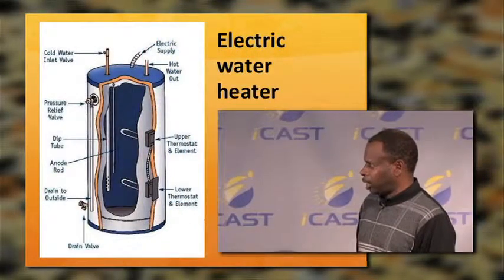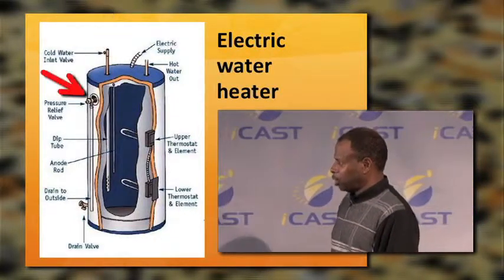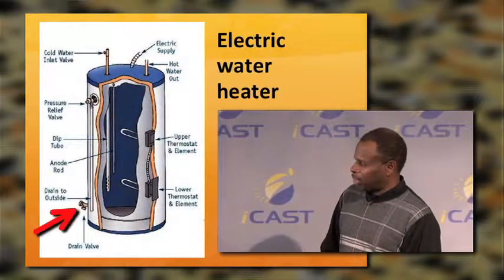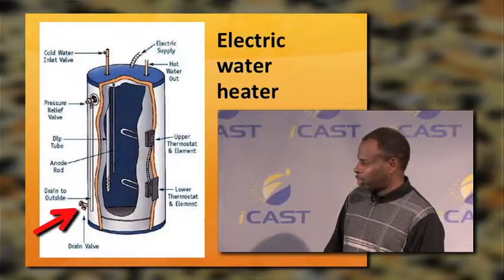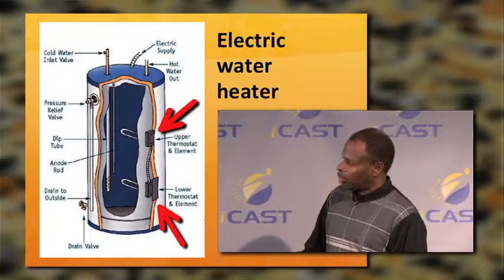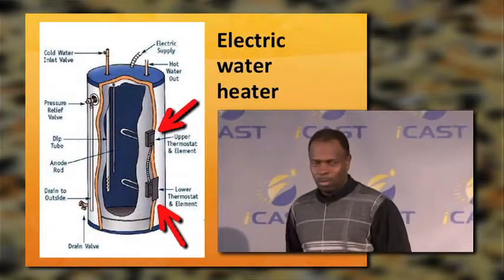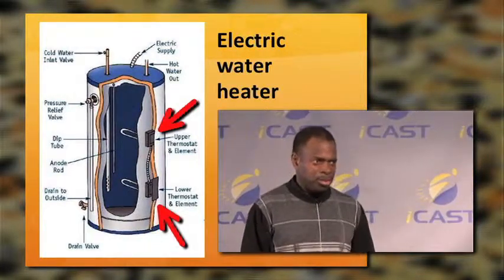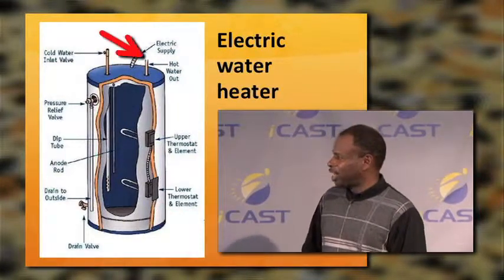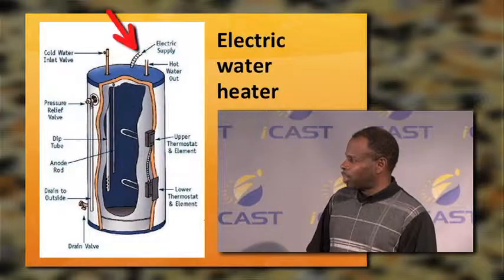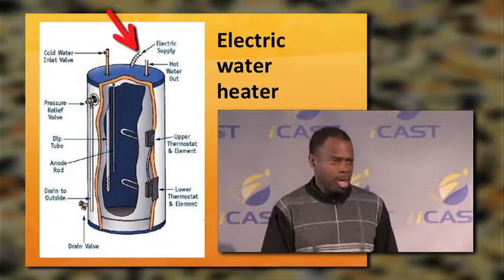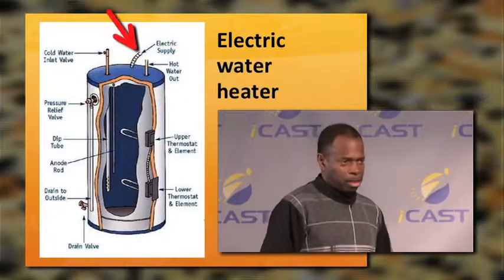This is the electric water heater — same cold water in, pressure relief valve, dip tube, anode rod, and drain to the outside. The difference is it uses 220-volt electricity. You have a lower thermostat and element and an upper thermostat and element. If one element goes out, your water will be warm instead of hot — and when you replace one element, replace the other. They're making electric water heaters more energy efficient now with faster recovery.